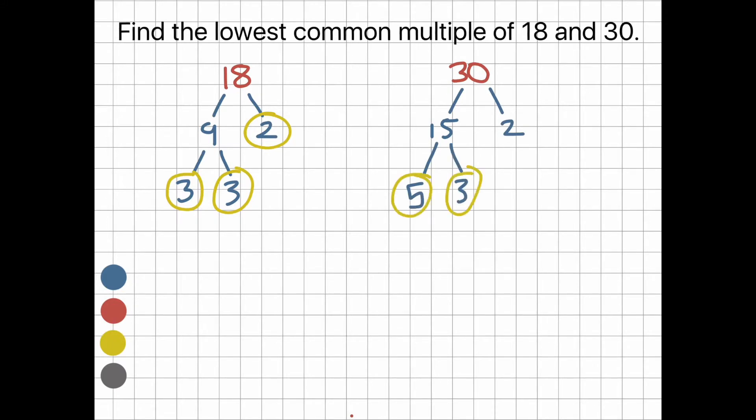5, 3, and 2 are prime numbers, so circle that. If we times these prime numbers, we get the number we started with. 3 times 3 times 2 is 18.